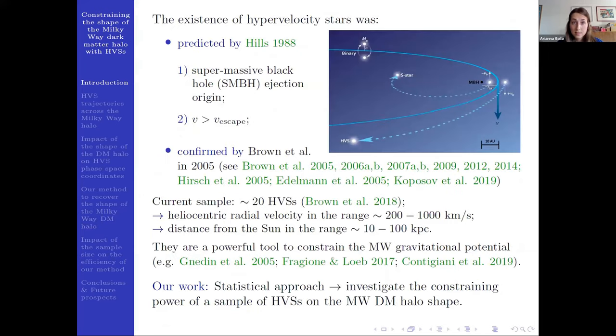The existence of such stars was predicted by Hills in 1988. He predicted that a hypervelocity star is ejected after an interaction between a stellar binary system and the supermassive black hole located at the center of our galaxy.